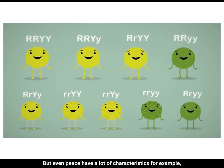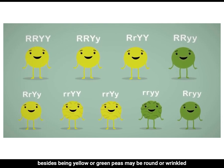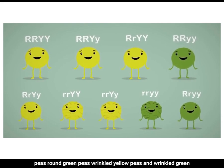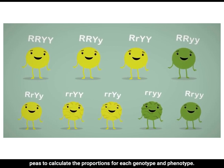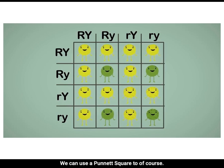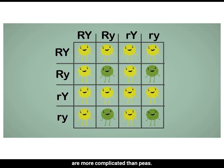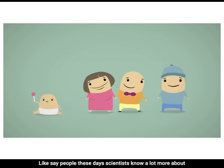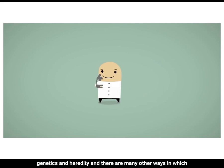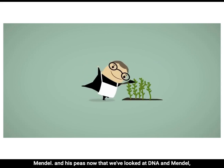But even peas have a lot of characteristics. For example, besides being yellow or green, peas may be round or wrinkled. So we could have all these possible combinations: round yellow peas, round green peas, wrinkled yellow peas, and wrinkled green peas. To calculate the proportions for each genotype and phenotype, we can use a Punnett square. Of course, this will make it a little more complex. And lots of things are more complicated than peas — like people. These days, scientists know a lot more about genetics and heredity, and there are many other ways in which some characteristics are inherited. But it all started with Mendel and his peas.